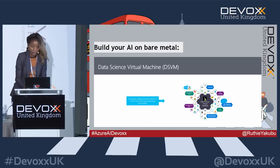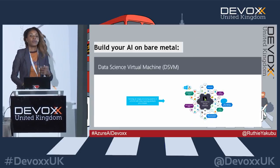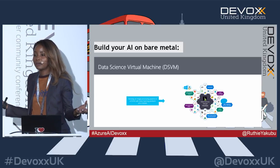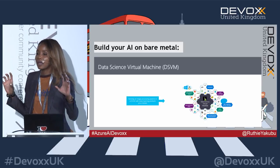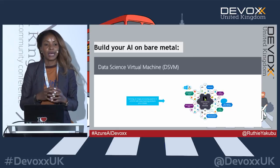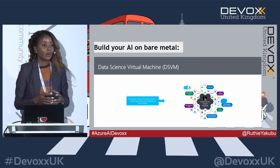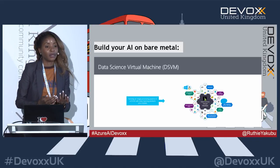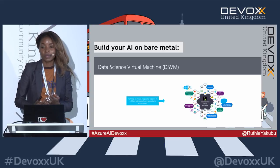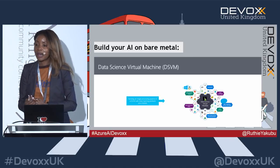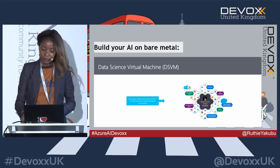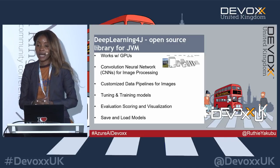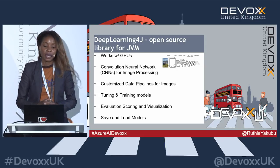This leads me to the next problem Java developers face. I've been coding in Java forever, but now with the hype about AI, I hear a lot of fellow Java developers asking: do I need to learn yet another language? Do I need to learn Python or R? So what are the frameworks out there that support the languages we're already coding in? That leads me to a good open source library that handles deep learning that we can leverage.